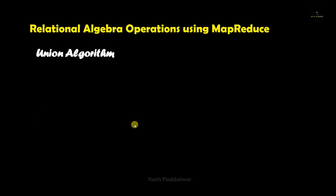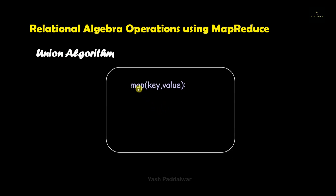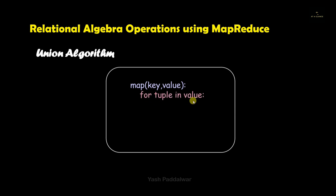We will first see the algorithm of the union operation, but before that let me tell you what union means. If we have two tables A and B, then union of those two tables will be a collection of all the distinct values that are present in both the tables. So now let's see how MapReduce is used to perform the union operation.